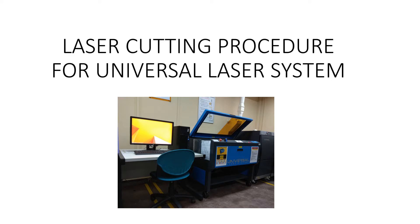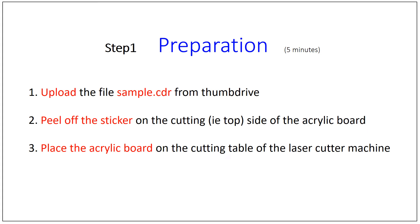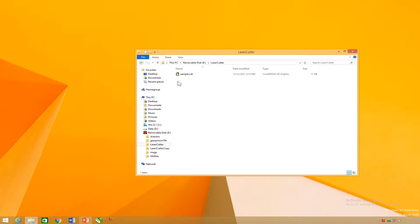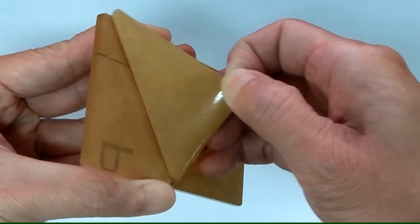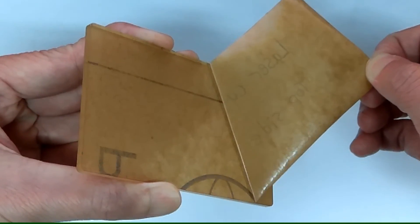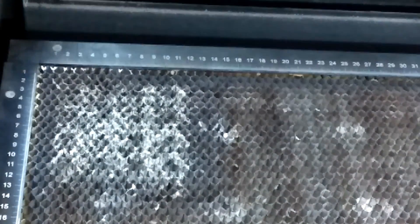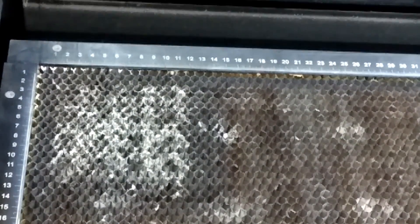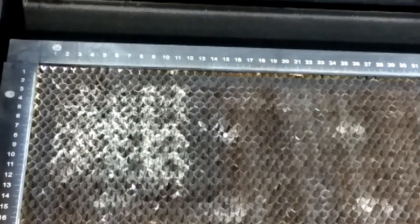Laser Cutting Procedure for Universal Laser System. Preparation: Upload the file sample.cdr from the thumb drive. Peel off the sticker on the cutting side or top side of the acrylic board. Open the cover of the laser cutter machine. Place the acrylic board on the cutting table of the laser cutter machine.